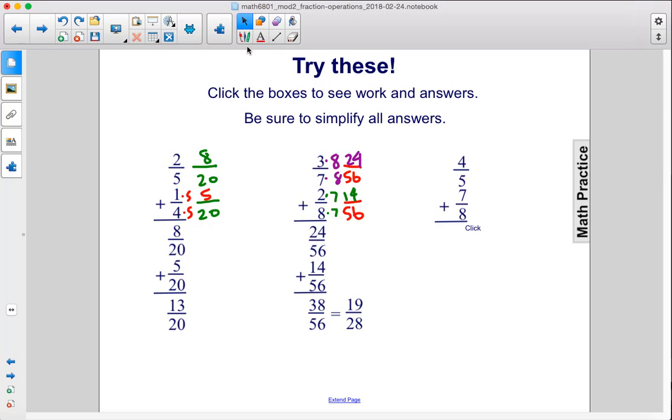All right, finally, we have 4/5 + 7/8. So multiply 5 and 8 together, and we get a common denominator of 40. So in order to get 40 here, we multiplied 8 by 5. So let's multiply the numerator by 5, and we get 35. And we had to multiply 5 × 8 to get 40. So if we multiply the numerator by 8, we get 32. And to see the rest of the work, we have 32/40 + 35/40. We add those together to get 67/40.